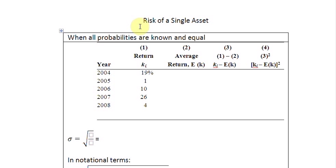Hello and welcome to this screencast in which we are going to talk about how to calculate the risk of a single asset. For that, we are going to assume two scenarios. Number one, when we know all probabilities as equal. So all probabilities in this case are known and equal.